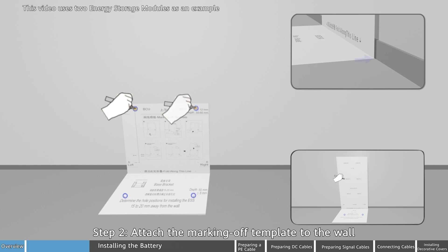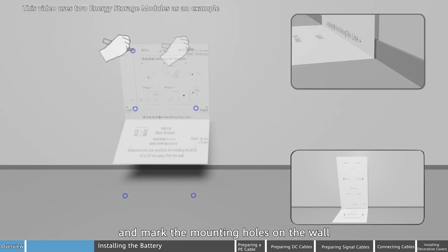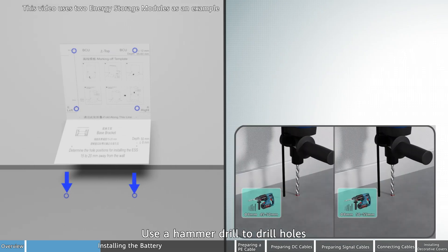Step 2. Attach the marking off template to the wall and mark the mounting holes on the wall. Use a hammer drill to drill holes.